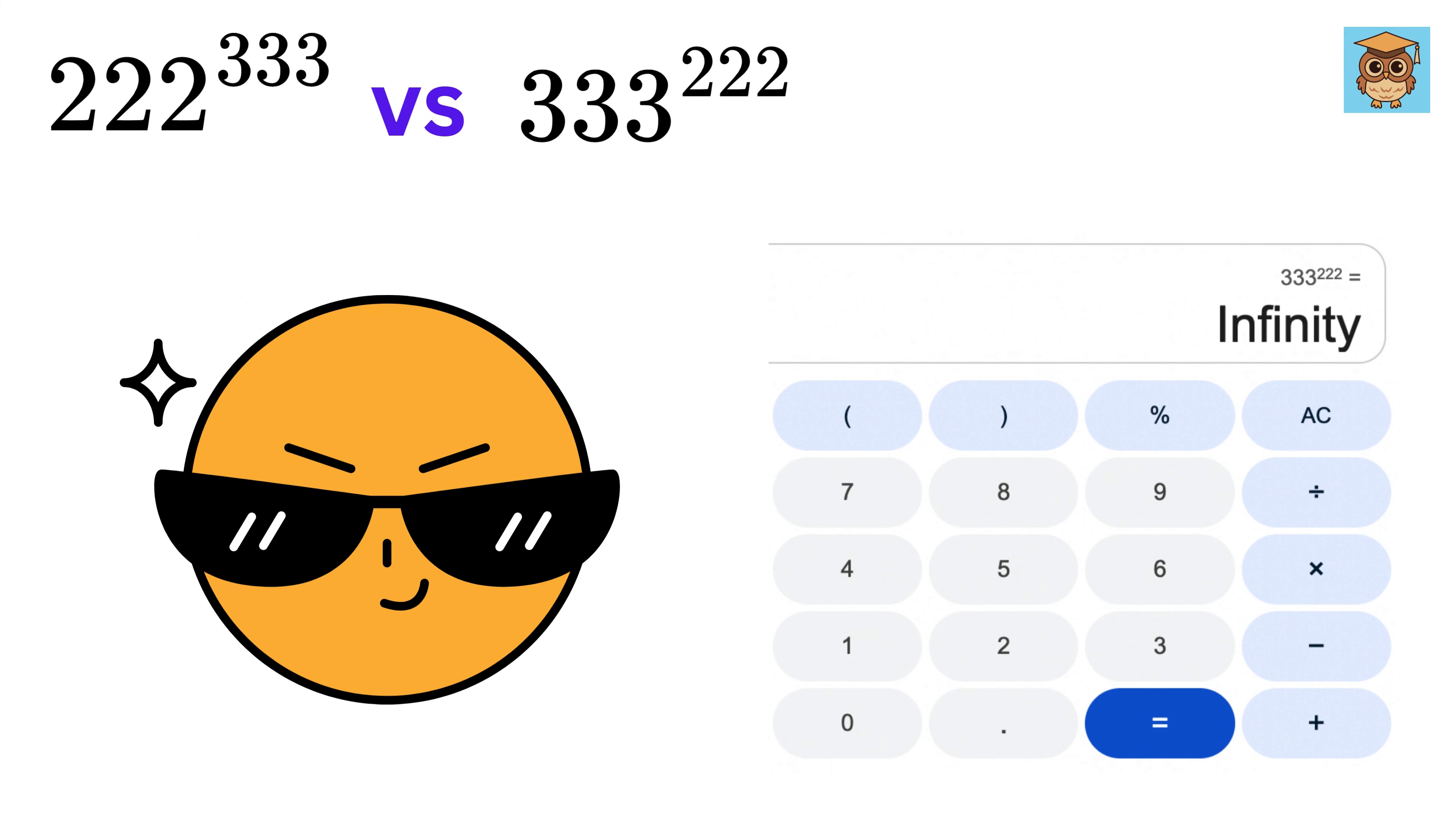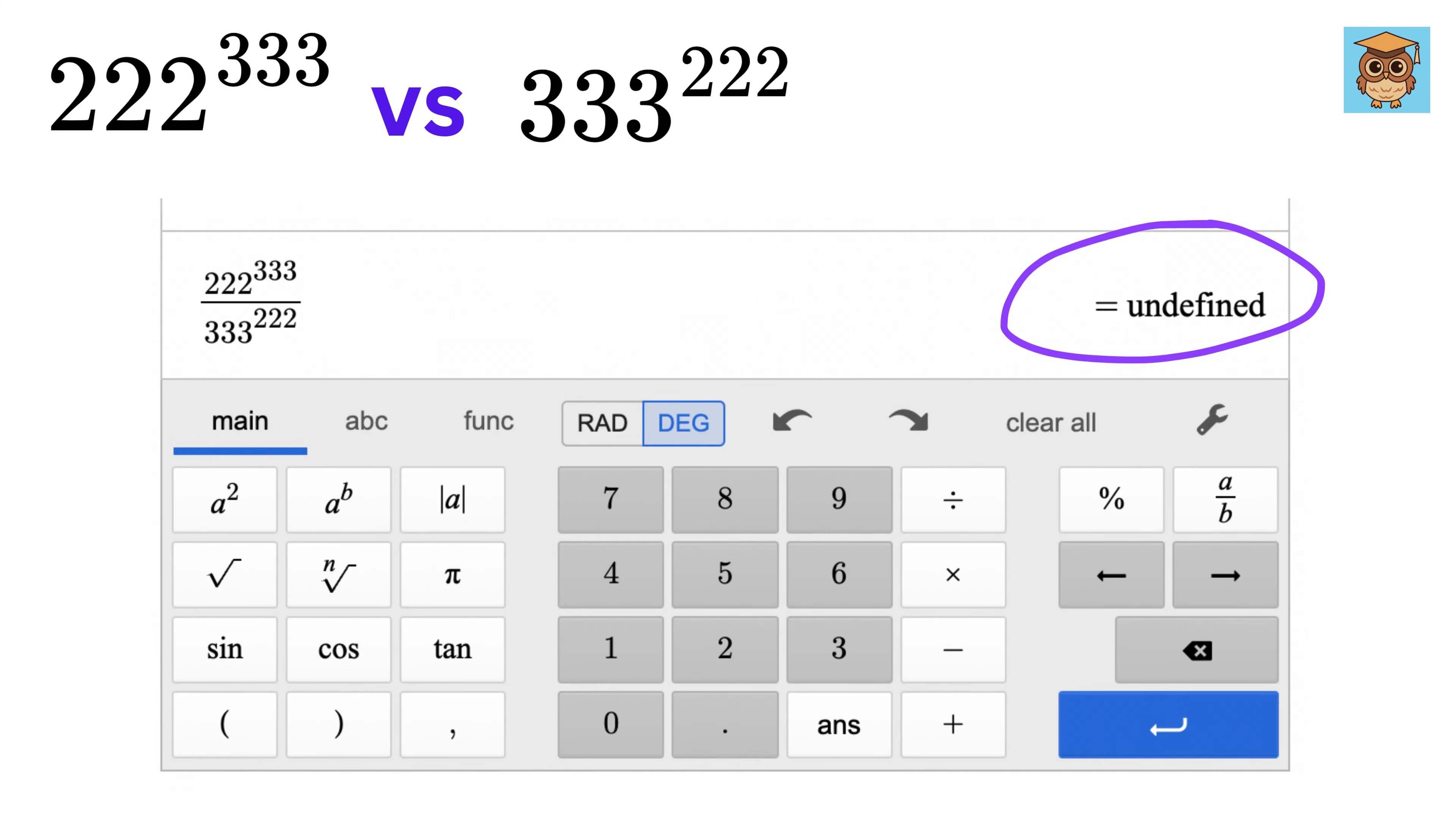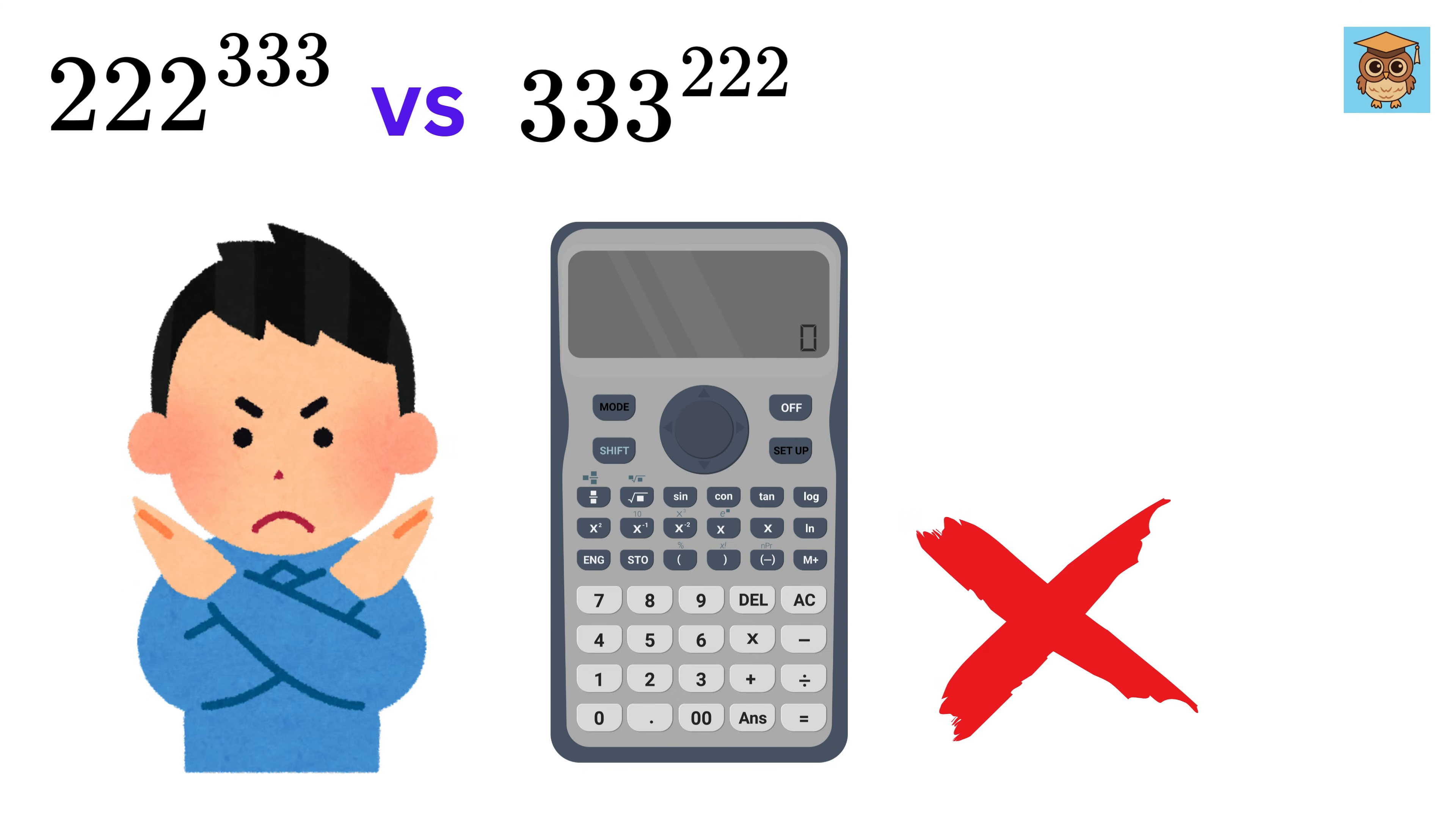Now, if you also try to become smart and put this value divided by this value to find out the ratio, it will still throw an error or show it as undefined. However, there's a clever trick you can use with a calculator to identify the larger number, and that's precisely why I haven't allowed calculators for this.